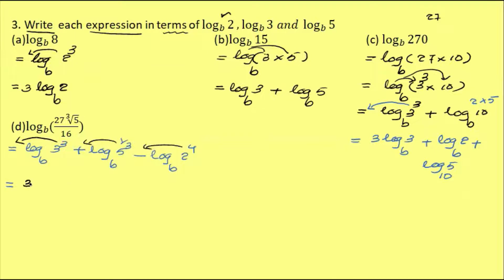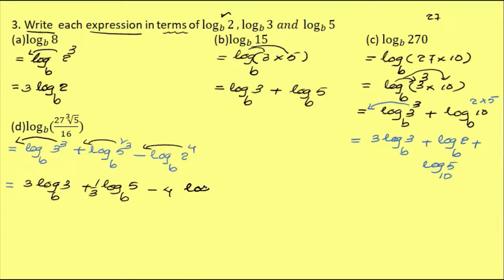This is 3 — so, 1 by 3 log 3 base b, plus 1 by 3 log 5 base b, minus 4 log 2 base b. That's what it is — log 2, log 3, log 5 — that's what it is.